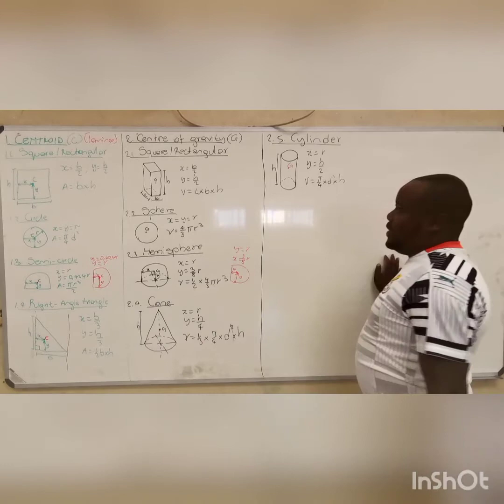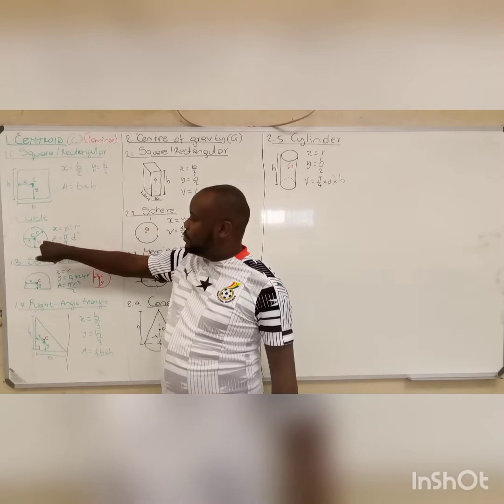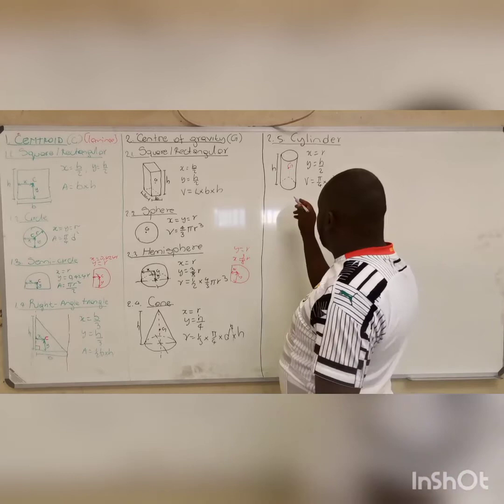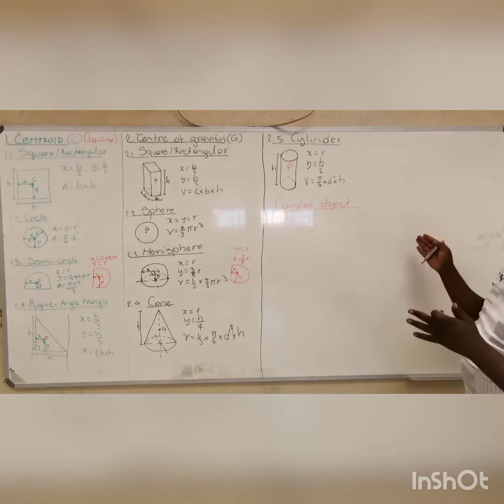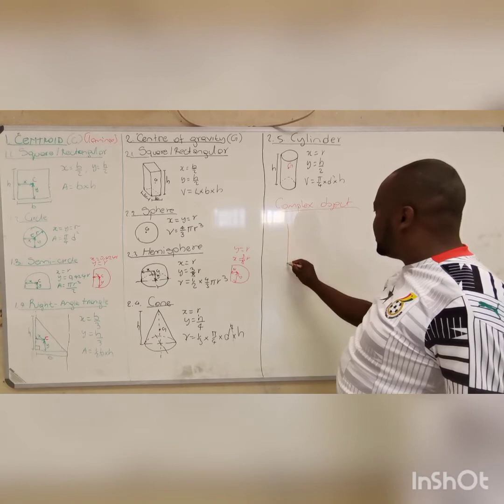It is easy to find the center of gravity if you are only dealing with one shape. But when you have a complex object — an object with more than one shape — it becomes more involved. There are objects of this kind where multiple shapes are combined.